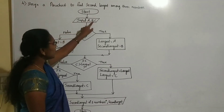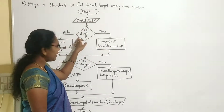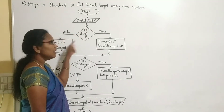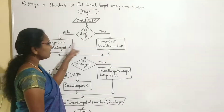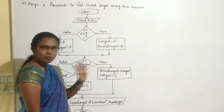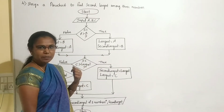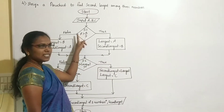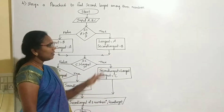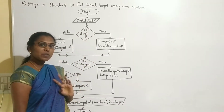Next, we find the largest and second largest of two numbers A and B using a condition. If A is greater than B — this condition is written using the diamond symbol — then two possibilities exist. If A is greater than B, the largest is A and second largest is B. Otherwise, if A is not greater than B, then B is largest and A is second largest.